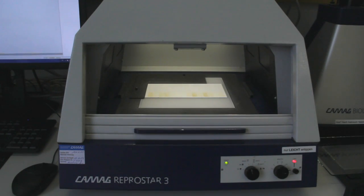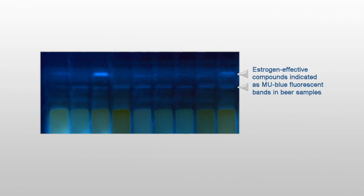White light and fluorescence images at UV366 nm were captured using the Reprostar III documentation system in the S1 laboratory. The blue MU fluorescence of estrogen-effective compounds was measured at 366 nm using an edge filter of 400 nm and a mercury lamp of the TLC Scanner III.